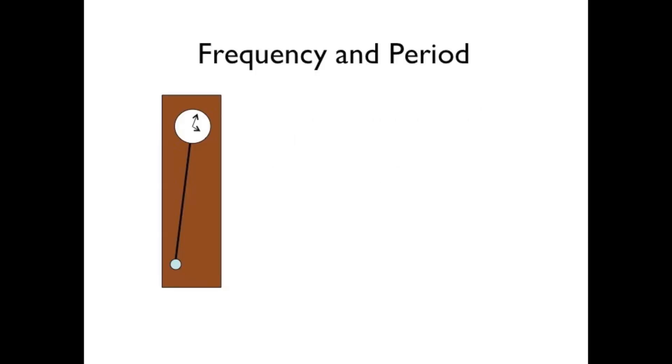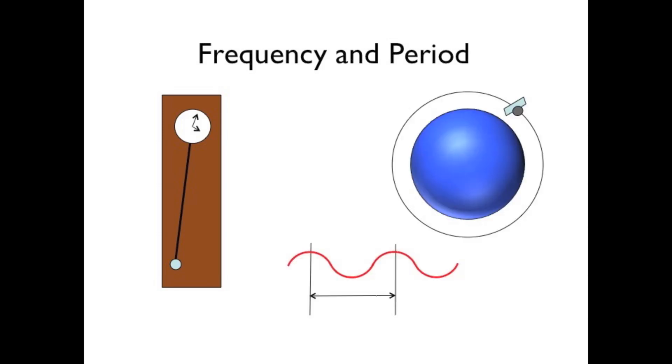Frequency and period. Whether it is a pendulum on a clock, a satellite going around a planet, or the oscillations in an electromagnetic wave, all motions that regularly repeat themselves will have a period and a frequency.